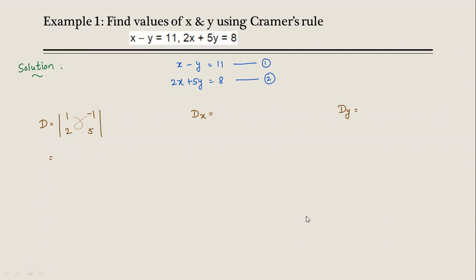Now let us find the value: one into five minus two into minus one, so five plus two, which is equal to seven. So D equals seven.